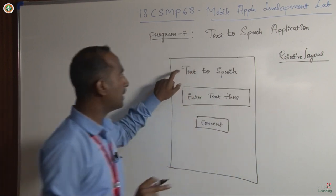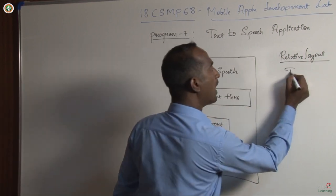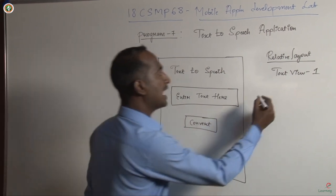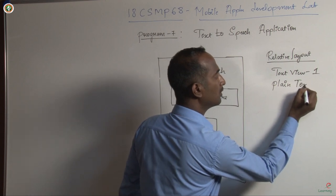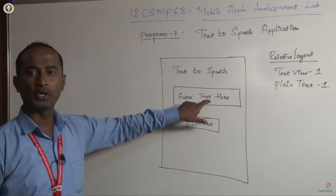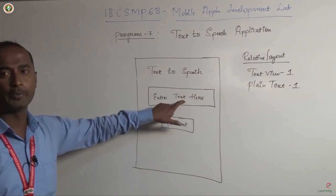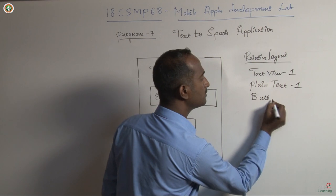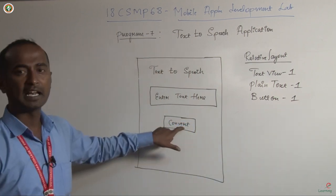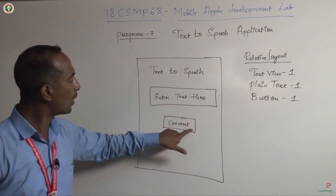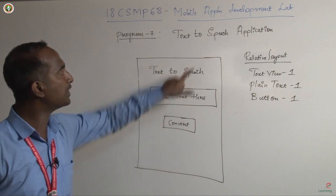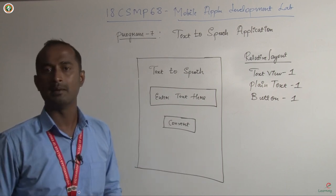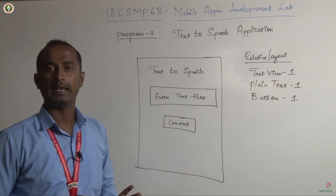Then I need a text view to display the title. How many text views are required? One text view. Next, I need one plain text inside which the user is going to enter the input. I will make use of the attribute name and give the hint 'Enter the text here.' Then I need only one button. The button name is Convert — whenever the user clicks it, whatever text is in the plain text will be converted to speech. This is the simplest design and simplest program in your syllabus. Hardly half an hour is needed to implement it.